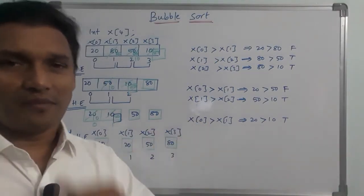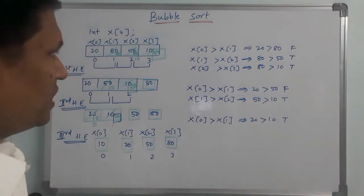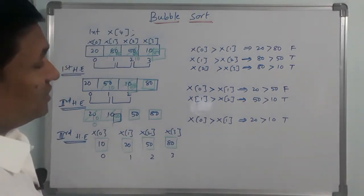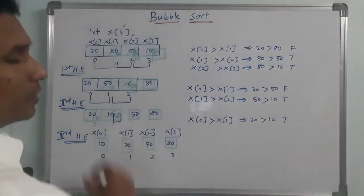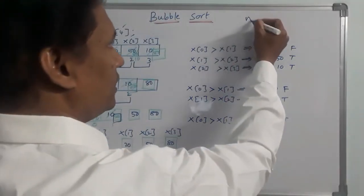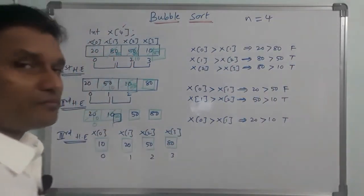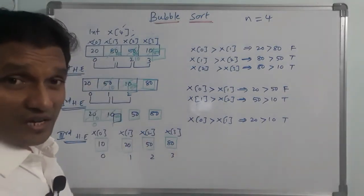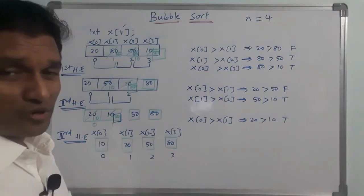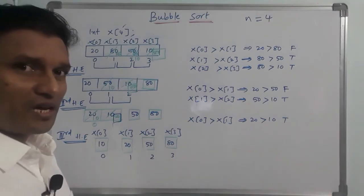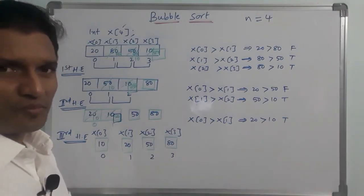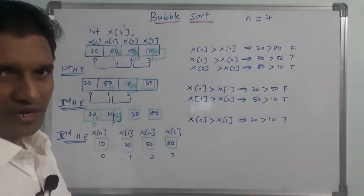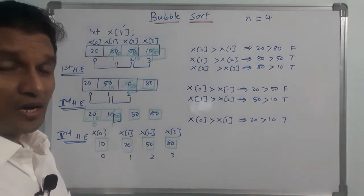The bubble sort algorithm is simple. For a list of n elements, for example n equals 4, we have n minus 1 passes — that is 3 passes.